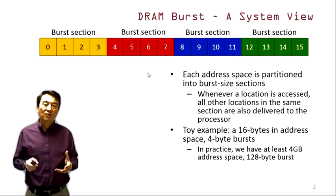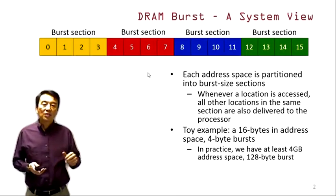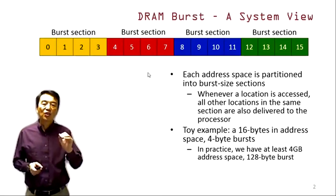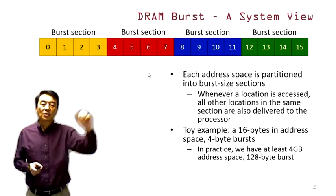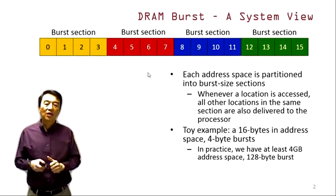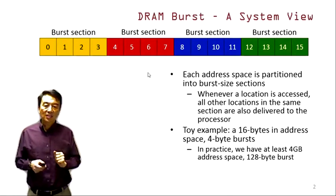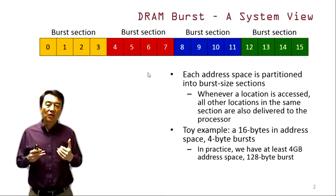Now we're going to move the concept into a programmer's view or system view of how DRAM burst works. In practice, programmers see that the address space of a process is partitioned into burst-size sections. The size of these sections depends on the particular DRAM system, and whenever a location within a DRAM burst section is accessed, all other locations in that same section will be delivered to the processor.